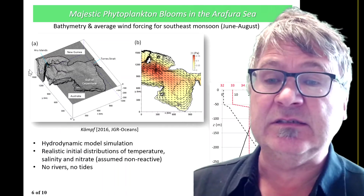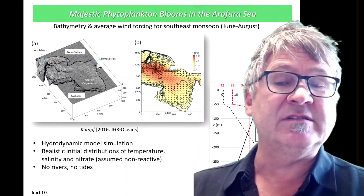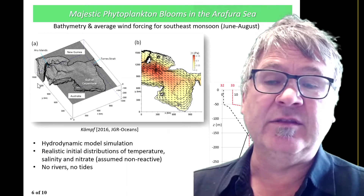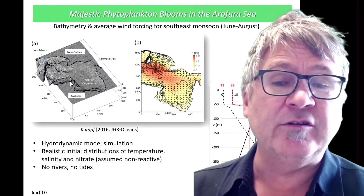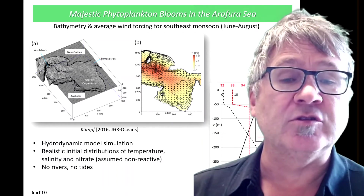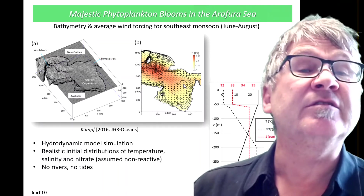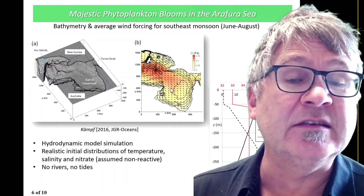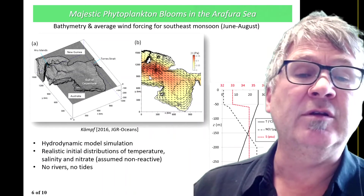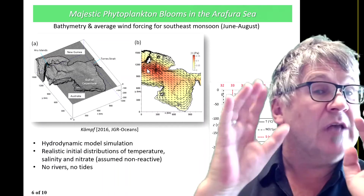We have a model domain — this is the model domain here up in the top left. This is the Arafura Sea. You have Torres Strait on one side and the Arafura Channel here on the other side as the connection. All very, very shallow. You force the model from a prescribed wind distribution. Panel B shows you the wind distribution during the southeast monsoon. These arrows show the wind direction, relatively strong; the colors show how strong — 0.15 Pascal is the strongest winds here. This is how you drive the model.